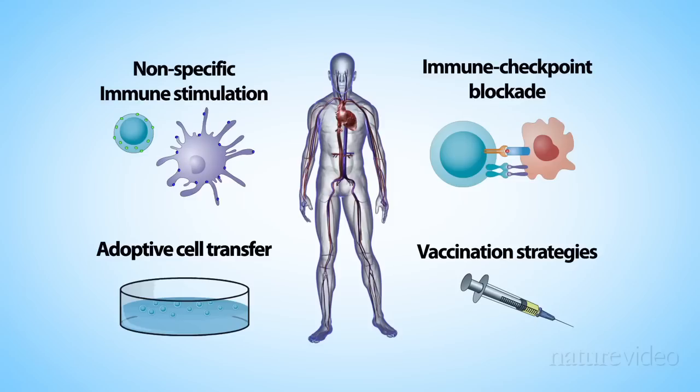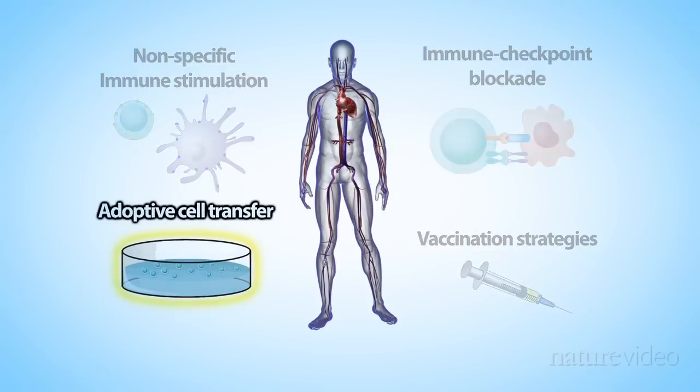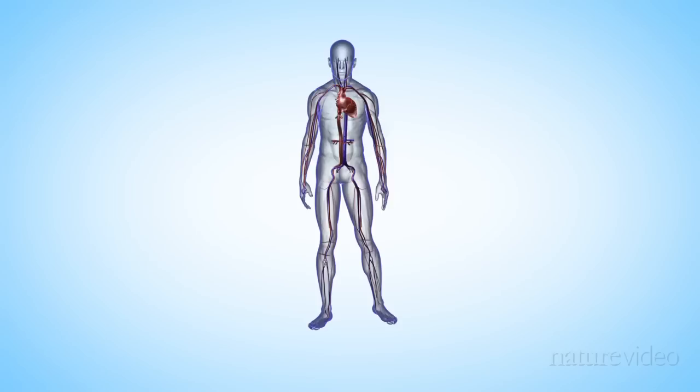Activating immune cells inside the body can be difficult, but the next strategy, adoptive cell transfer, combats this by extracting the immune cells from the patient and activating them outside the body. It enables researchers to specifically target the cancer tissue.